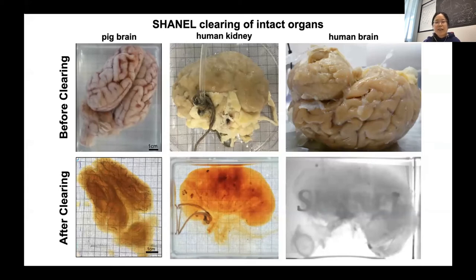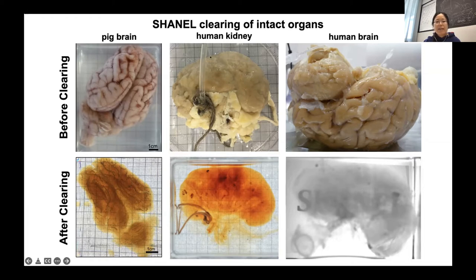Based on this whole setup, we managed to clear whole human organs — for example a human kidney and even a whole human brain, the largest organ in the human body. We also tried it for other mammalian organs like pig brain and pig pancreas, and in the end we managed to make them all quite transparent.